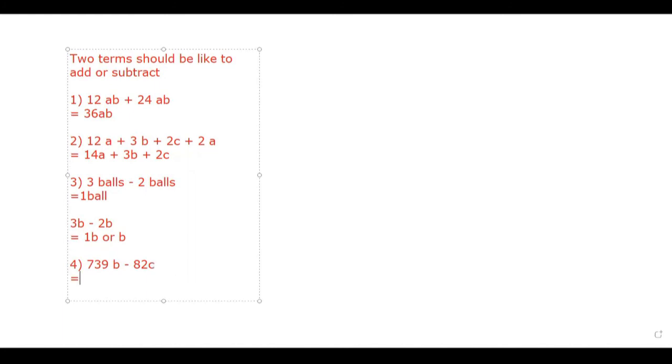What about this fourth question? It will be as it is. 739b minus 82c. Can you tell me why? Because they are unlike. Very good. So this is the final answer.